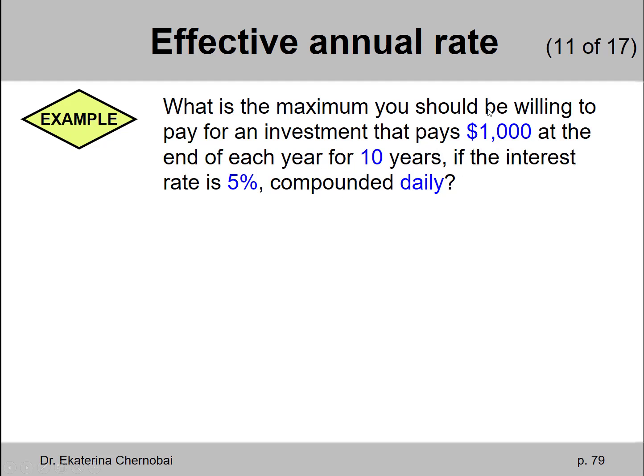So this is an annuity problem and we need to find the annuity present value. What are we going to use for the annuity PMT? $1,000. What are we going to use for the annuity N? 10.